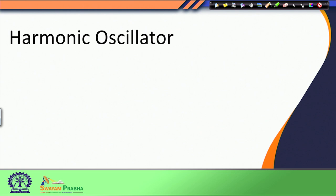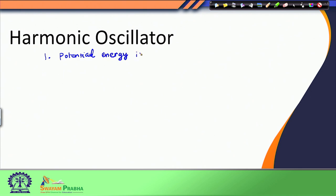Today in this lecture, we will deal with another problem — the harmonic oscillator — where the potential energy is actually a continuously varying function of the coordinate. The first difference in this problem is that the potential energy of the harmonic oscillator is a continuously varying function.